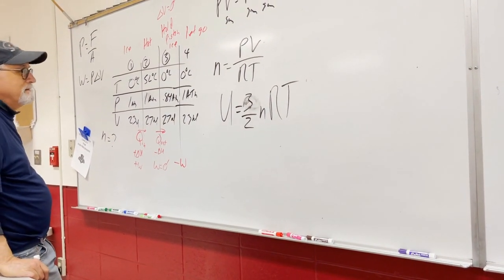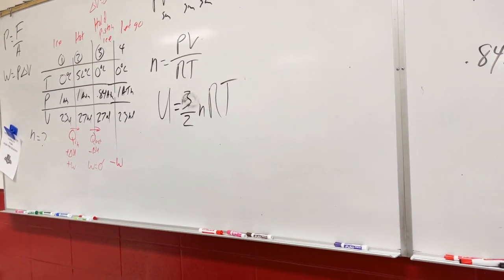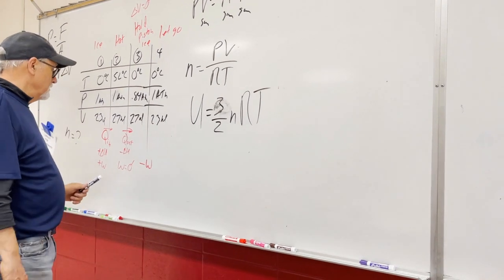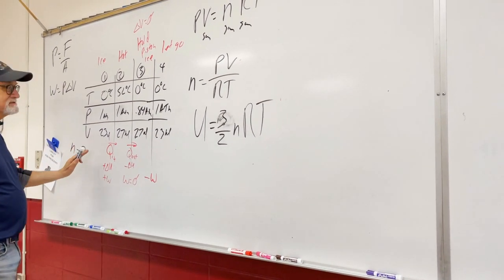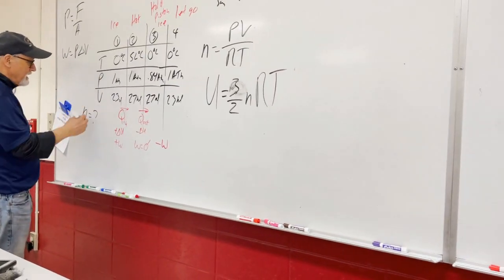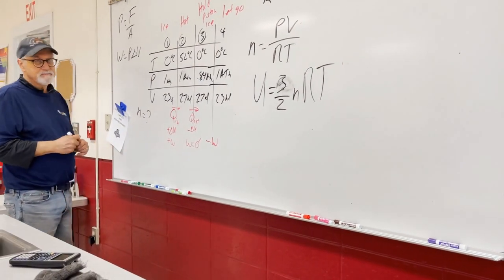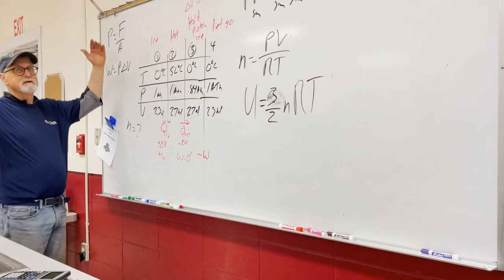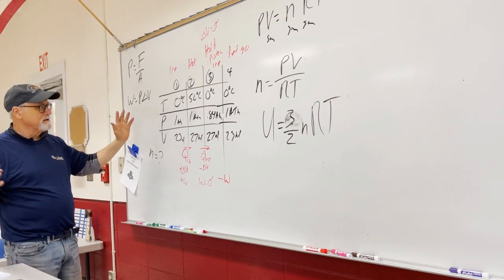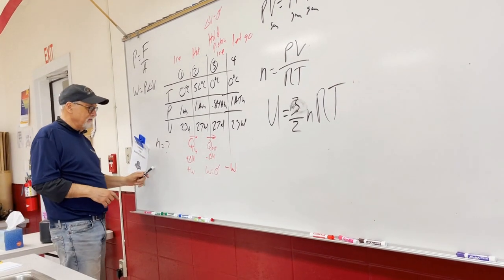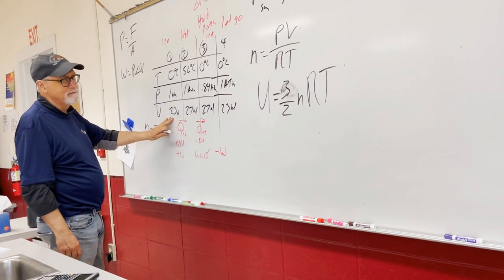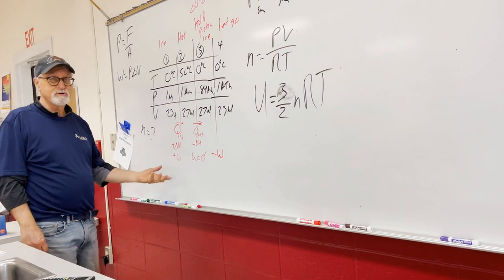We calculate U twice — once for states one, three, and four (same temperature), and again for state two (different temperature). The key to all of this is the number of moles. At STP, one mole of gas occupies 22.4 liters, which you'd convert to cubic meters to plug into the calculation.